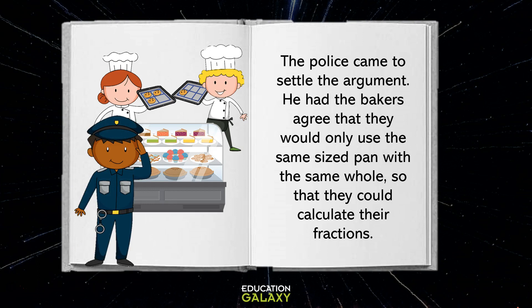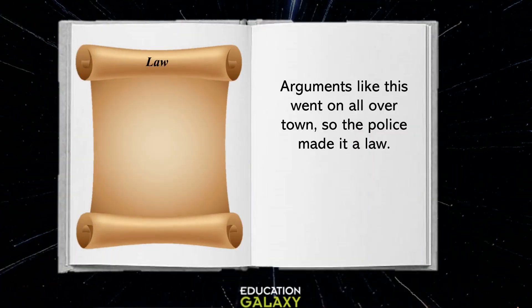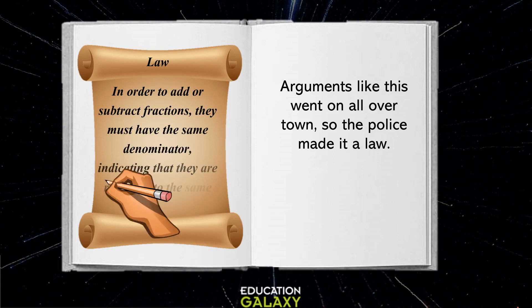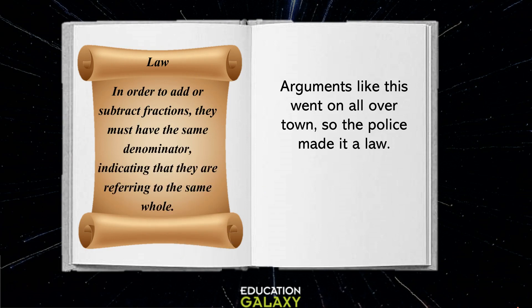The police came to settle the argument. He had the bakers agree that they would only use the same size pan with the same whole so that they could calculate their fractions. Arguments like this went on all over town, so the police made it a law. The law stated: in order to add or subtract fractions, they must have the same denominator, indicating that they are referring to the same whole.